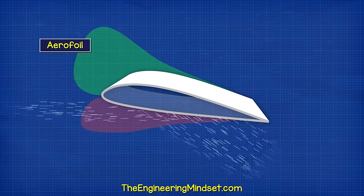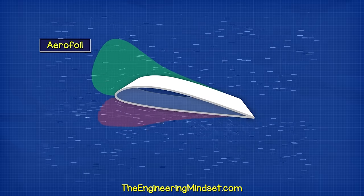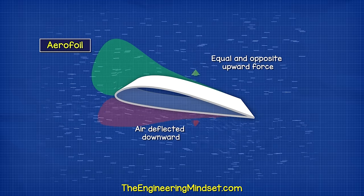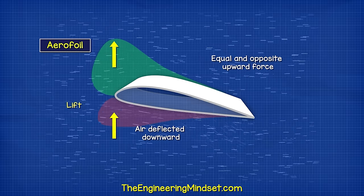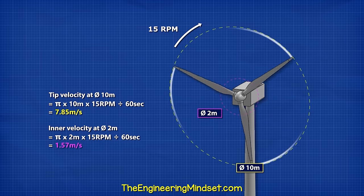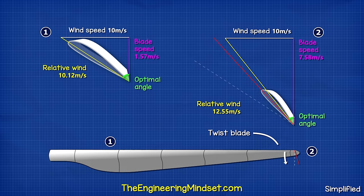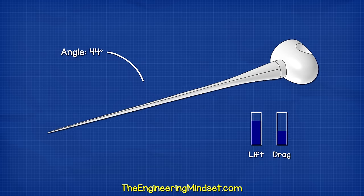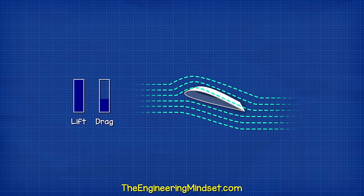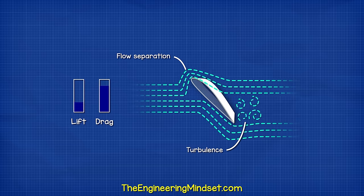We also have air colliding with the underside of the blade, providing additional force. The air on the top and bottom are being deflected downwards; this downward momentum creates an equal and opposite upward force, also adding to lift. The tip of the blade has a higher velocity through the incoming wind stream than the hub, so lift and drag are different along the blade. The shape of the blade is twisted to improve the angle of attack. We tilt the entire blade to alter the amount of lift produced. As the angle of attack increases, more lift is generated, but at a certain point the airstreams separate and become turbulent, which reduces lift and increases drag, slowing the rotation down.